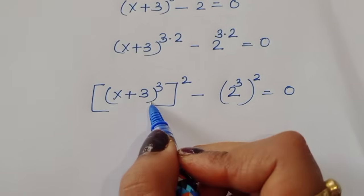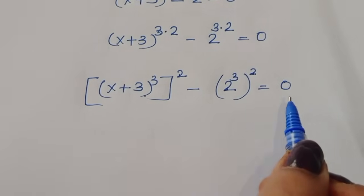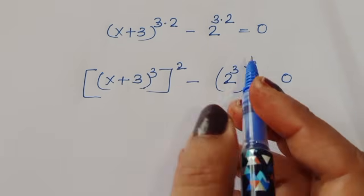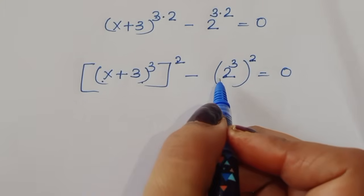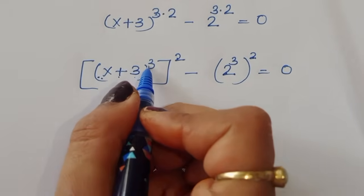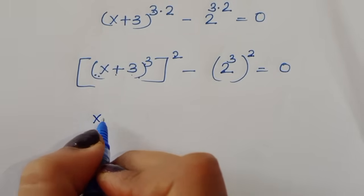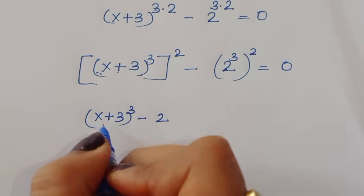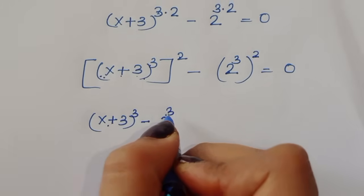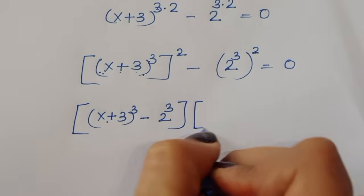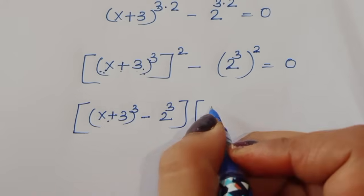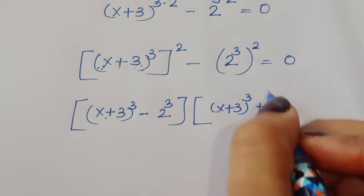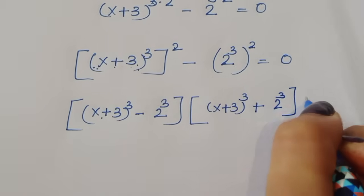This is in the form of a² − b², and the formula is (a+b)(a−b). So here a = (x+3)^3 and b = 2^3. We can write: [(x+3)^3 − 2^3] × [(x+3)^3 + 2^3] = 0.